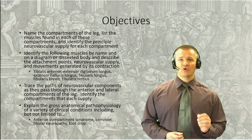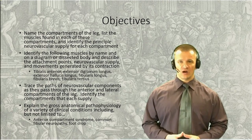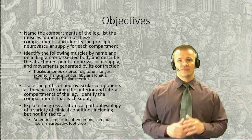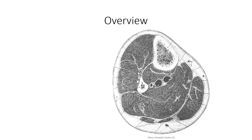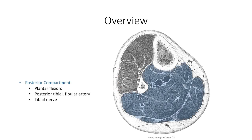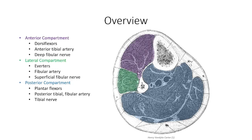There are also a couple of important clinical scenarios that we'll need to consider. We'll start with an overview of the leg. Recall that the leg can be divided into three functional compartments by invaginations of the thick crural fascia. This fascia is anchored to the tibia through fusion with the bone's periosteum. The anterior compartment occupies the space in front of the interosseous membrane and is involved in dorsiflexion and inversion movements. It is separated from the lateral compartment by a thick intermuscular septum.